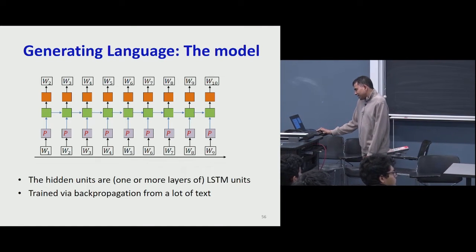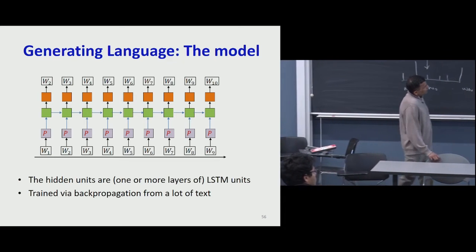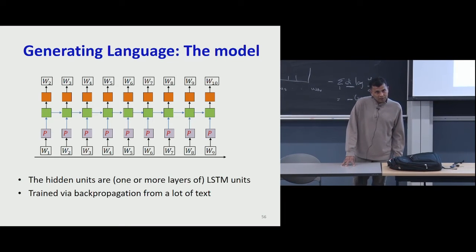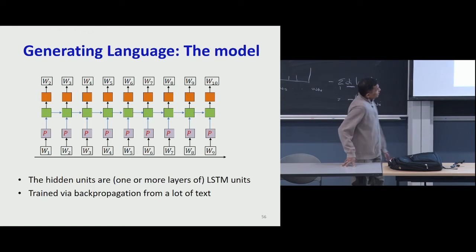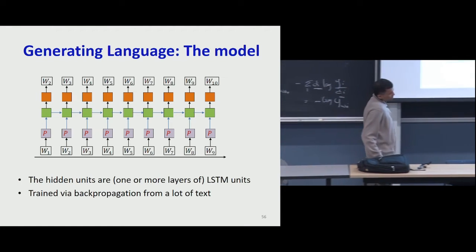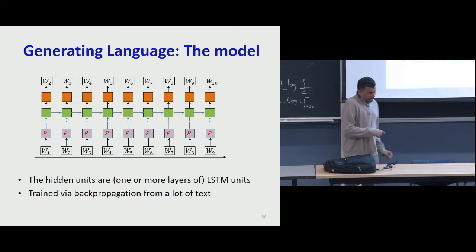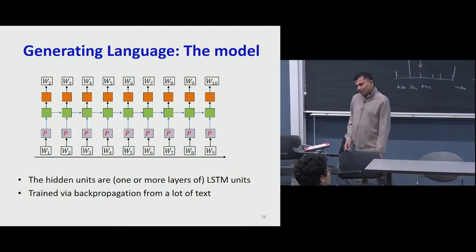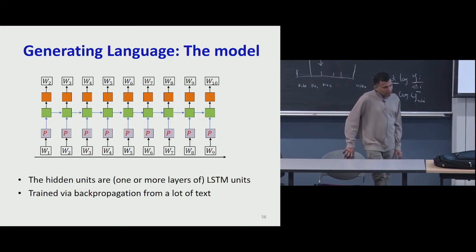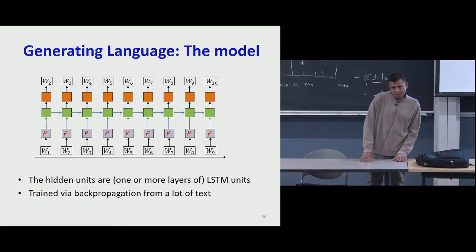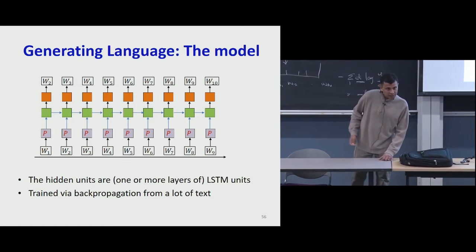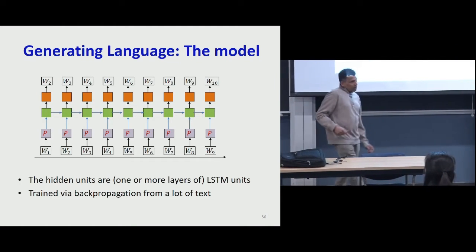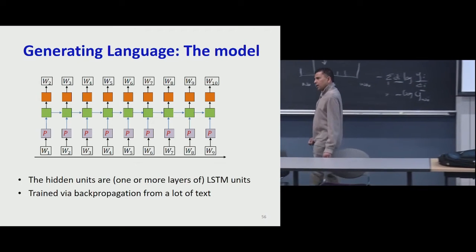When generating language, this is what our model would be. We saw the example where a C program was being generated. The model would have hidden units of one or more layers of LSTMs. At each time, you would be producing the next word. To train the network, you give it sequences of inputs — the sequences of desired outputs are going to be the next word at each time. Before words are analyzed by the network, every single word is projected down using this projection matrix.